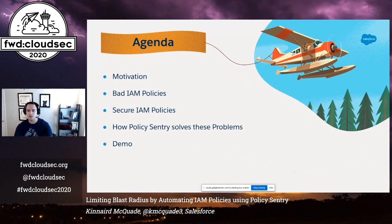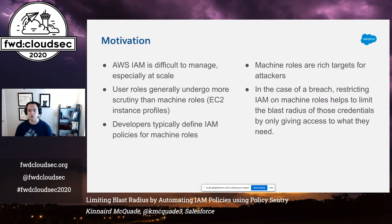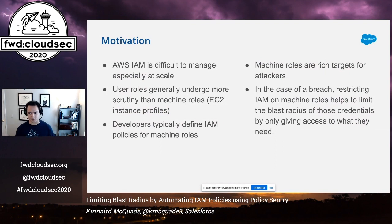Today we'll talk about why I wrote this tool, what bad IAM looks like and what secure IAM looks like, how Policy Sentry solves these problems and makes security easier, and we'll do a demo. AWS IAM is notoriously difficult to manage in a secure manner, especially at scale. It's hard enough when you have just a few dozen engineers who build things in AWS, and it's another thing when you have thousands. I've observed a few things about the industry that motivated me to write this tool.